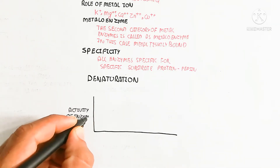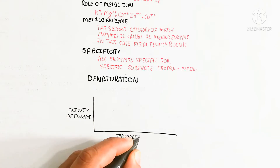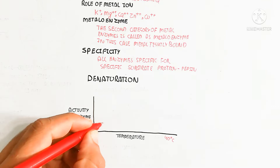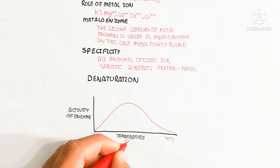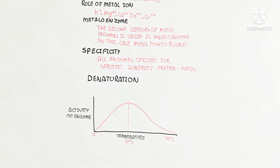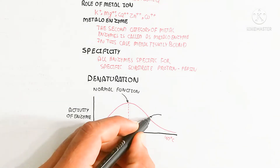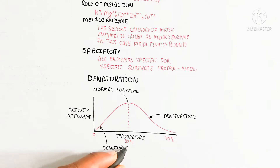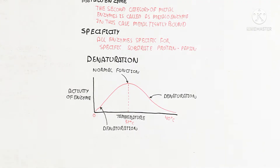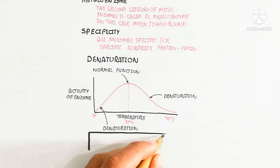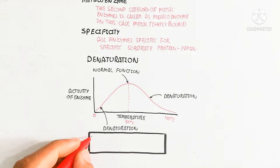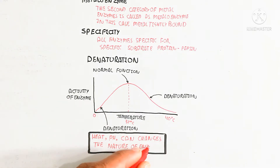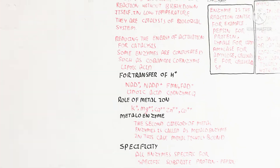Denaturation means the enzyme requires an optimum temperature and optimum pH to function. On the graph, the horizontal axis shows temperature and the vertical axis shows enzyme activity. At 37°C, the enzyme functions normally in humans. When temperature is increased or decreased beyond this, denaturation occurs. Heat and pH changes alter the nature of the enzyme.